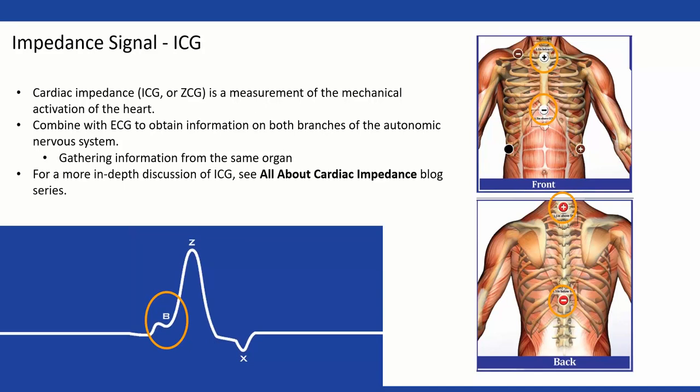Down here in the graphic, what I'm showing you is actually a derivative of the impedance waveform — the dz/dt — which is mostly what we actually work with during analysis. I'm highlighting the B notch here, and we'll go over that in a little bit. We also have the 'All About Cardiac Impedance' blog series I covered in the previous slide.